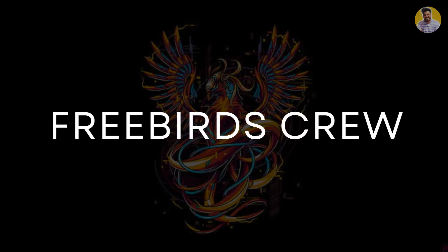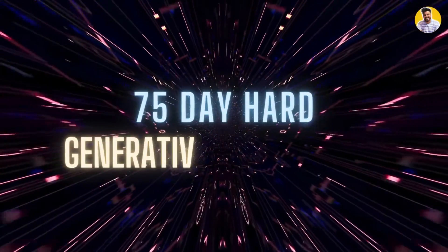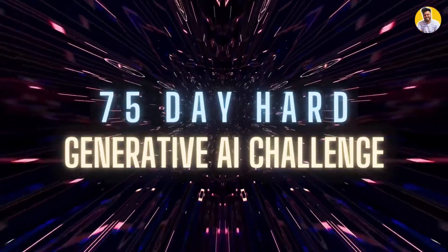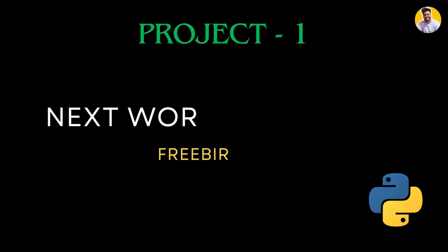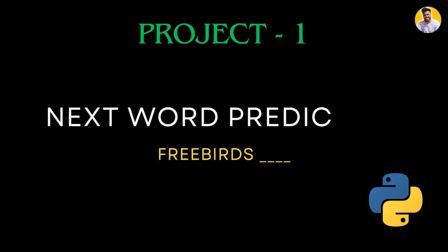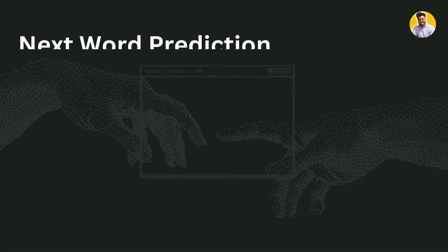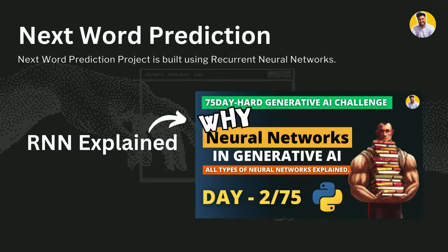Hello guys, welcome to Free Bird Screw and welcome to the 75-day hard generative AI learning challenge. This is day 7, and in this video I will tell you about a project called next word prediction. This next word prediction project is completely based on recurrent neural networks, which I already discussed in my day 2 video — you can watch it, and I'll put the link in the description.